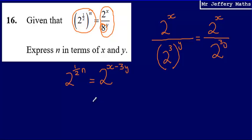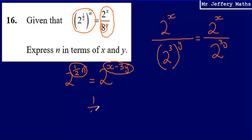Now that I've written these as powers of 2 — 2 to the power of half n and 2 to the power of x minus 3y — that means that half n must be equal to x minus 3y. So half n is equal to x minus 3y.